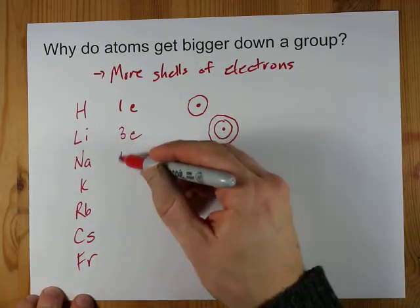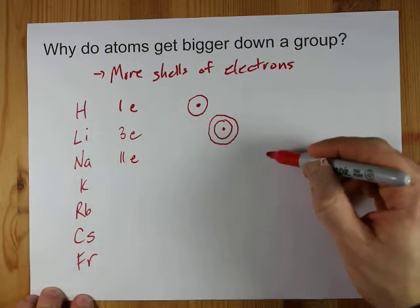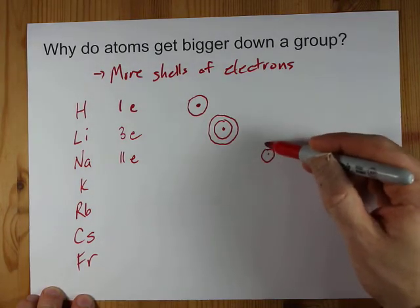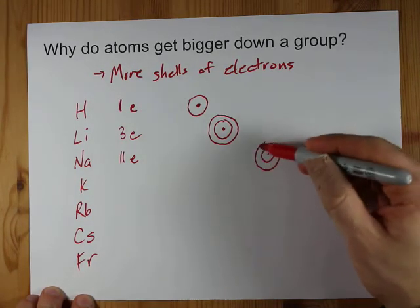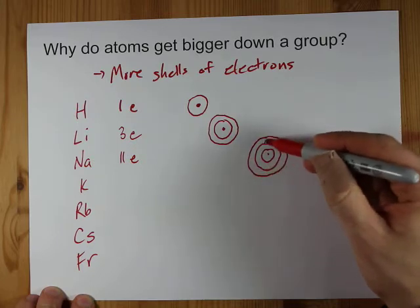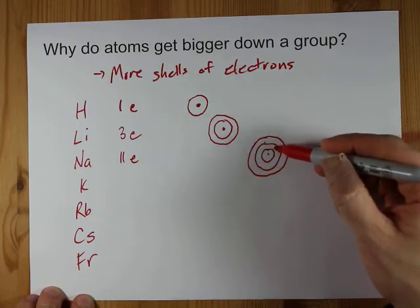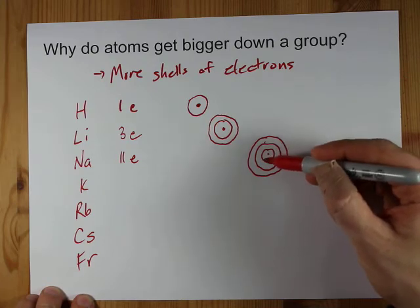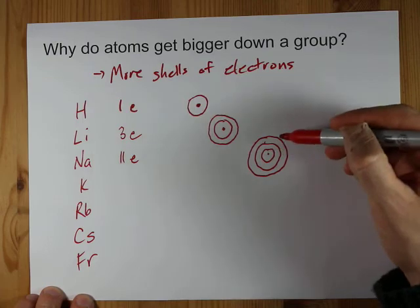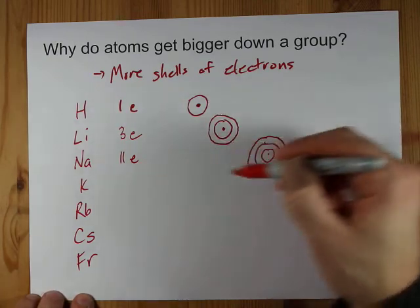Get down to sodium, which needs 11 electrons. You can put two in the first orbit or shell, eight in the next one, but then you need a third shell to accommodate that 11th electron. And even though these two inner shells are held closer than they were here or there, there's a third shell occupied, so the atom is larger.